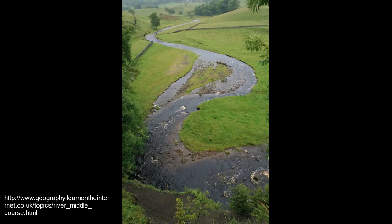This is an example of the middle course of the river in Yorkshire. If you look at the very top of the picture, you can actually see the slopes of the hill. You can see that it's got that V-shape, but it's not as steep as that upper course.